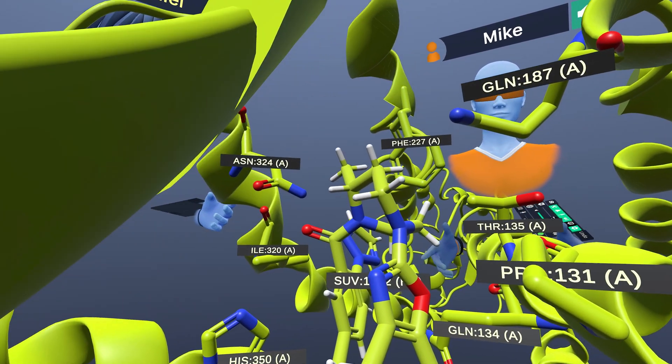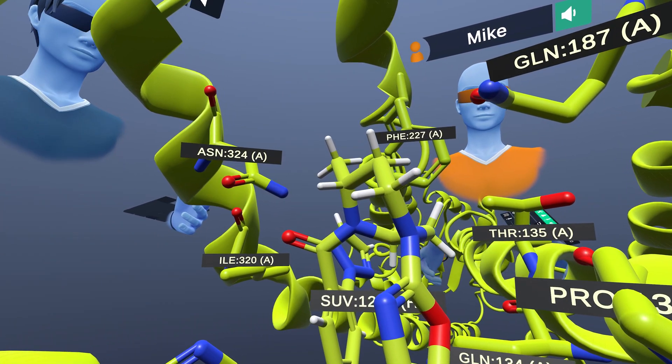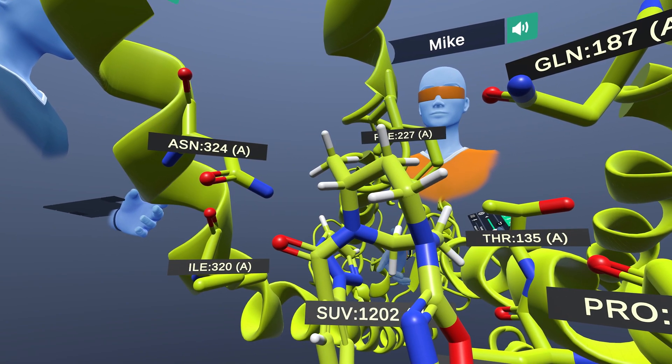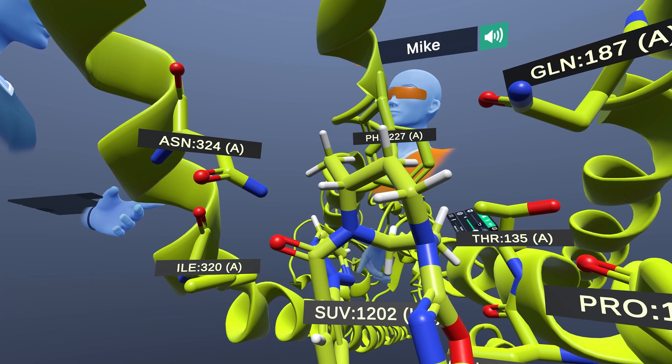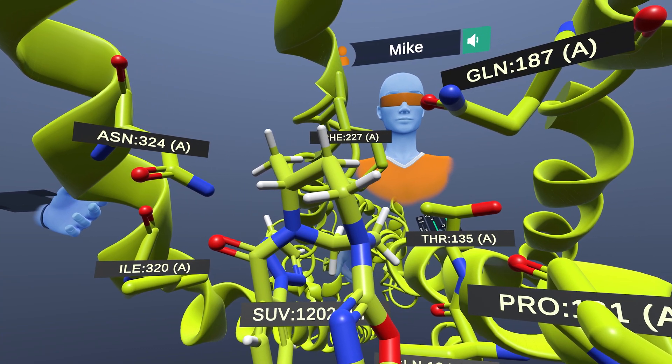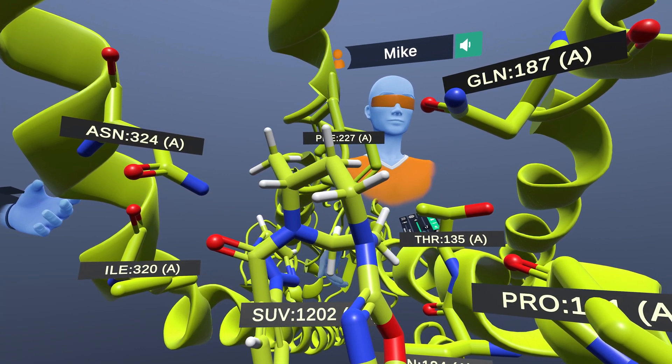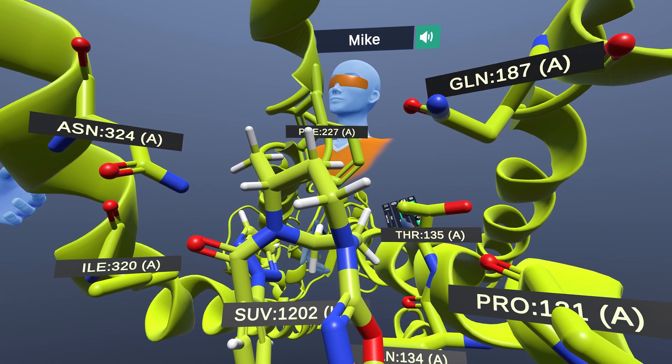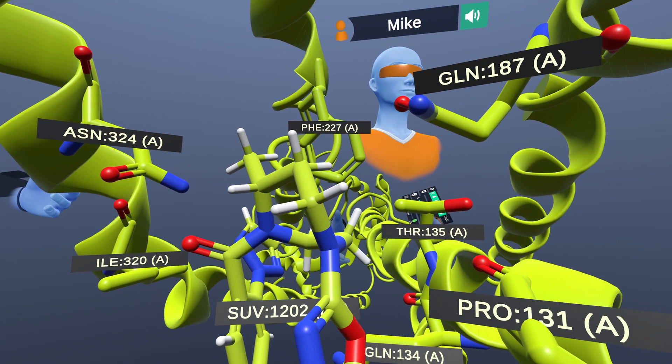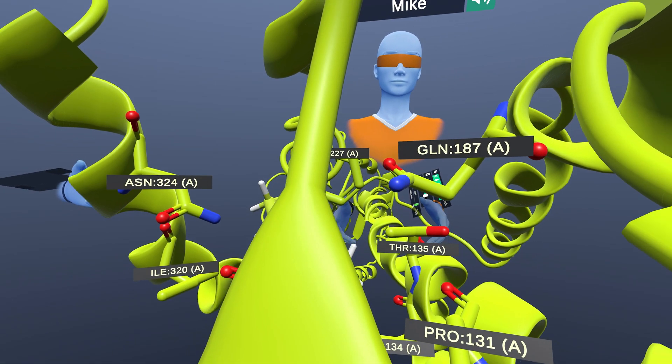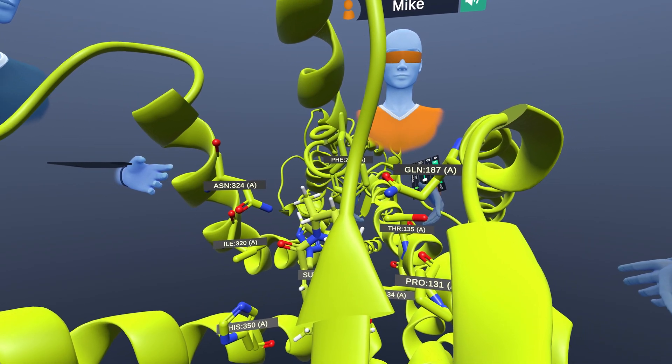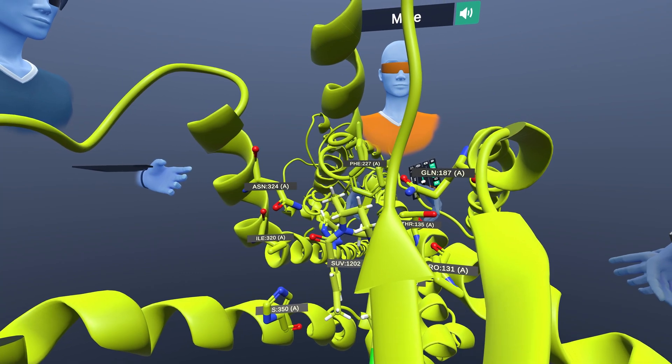That's right. So the orexin system is in the brain and the orexin peptides mediate a lot of behavior, arousal, wakefulness. And there are actually mutations in the system that lead to the condition called narcolepsy, where people will fall asleep quickly and unexpectedly, at times when they don't want to fall asleep.